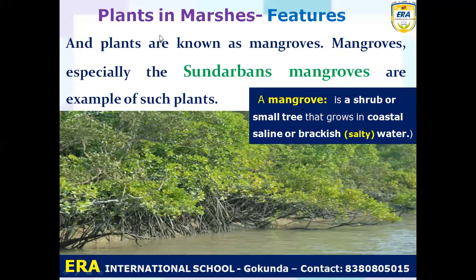The second feature is that plants growing in marshes are known as mangroves. Mangroves — especially the Sundarbans mangroves — are examples of such plants. A mangrove is a shrub or small tree that grows in coastline, saline, brackish, or salty water — near seashores or beaches. The mangrove roots are above the soil and water for breathing.